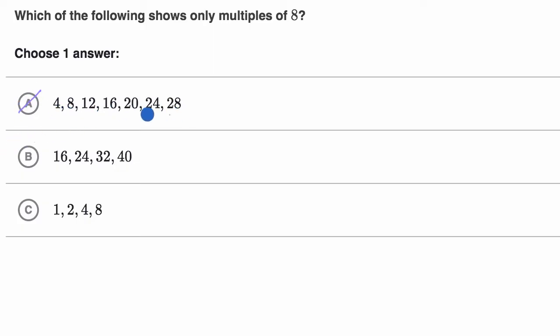And you can think about what they're showing here. These are actually multiples of four, not multiples of eight. We can skip count here. Four, eight, 12, 16, 20, 24, 28. These are multiples of four, not multiples of eight.